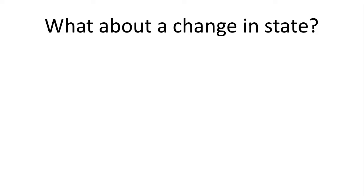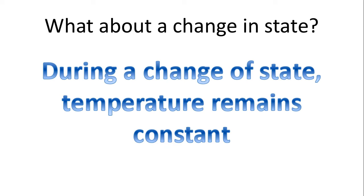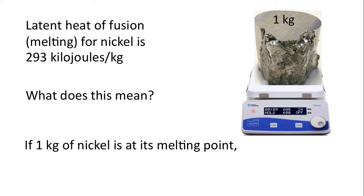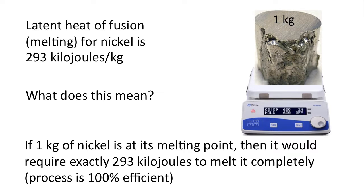What about a change of state? During a change of state, the temperature remains constant — that's very important to remember. For example, the latent heat of fusion or melting for nickel is 293 kilojoules per kilogram. Imagine one kilogram of nickel at its melting point: to melt it completely would require exactly 293 kilojoules of energy, assuming 100% efficiency. If we have two kilograms of nickel to melt completely, it would require double — 293 plus 293 kilojoules.